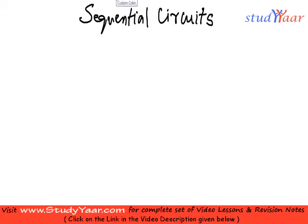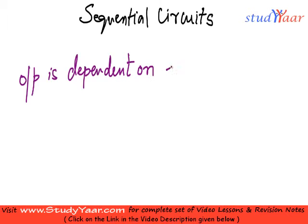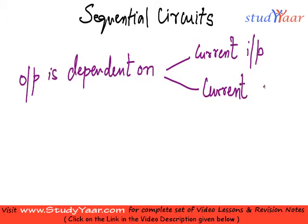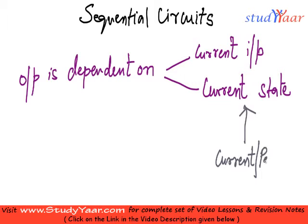What is a sequential circuit? It is a circuit in which your output is dependent on your current input and your current state. Your state is determined by either your current input or past inputs. So your state in itself is determined by current or past inputs.